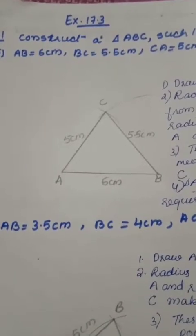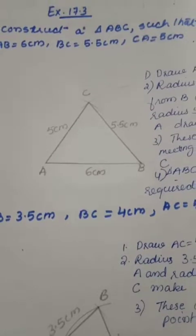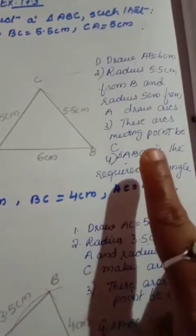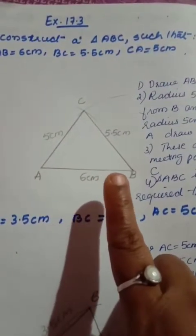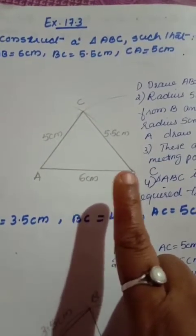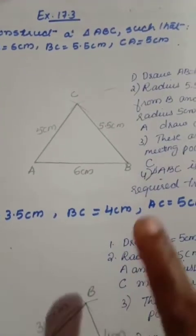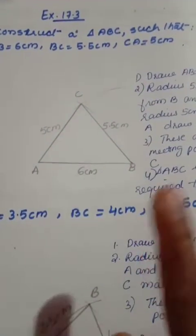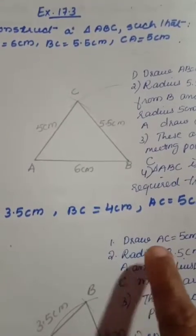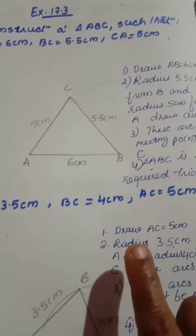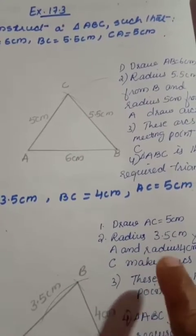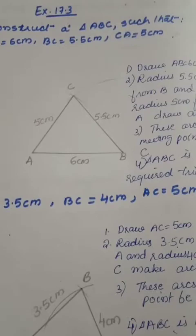Hello children, I hope you are doing fine at home. You have to write down the steps of construction — that is very important. When you do the construction, use scale and pencil only for drawing arcs and lines. Keep your geometry box beside you and do it neatly. Now, Exercise 17.3, Question 1: Construct a triangle ABC.